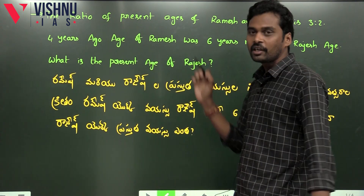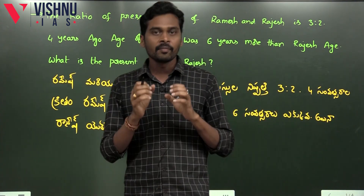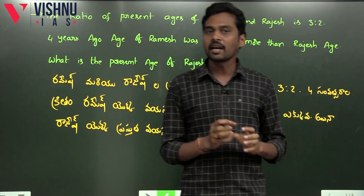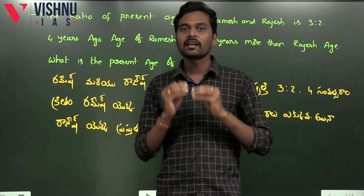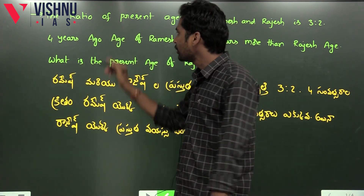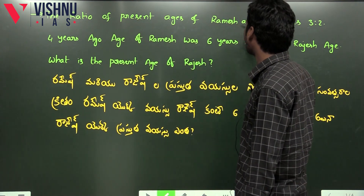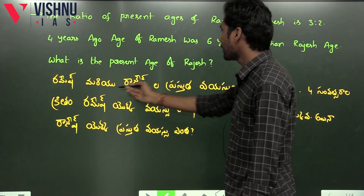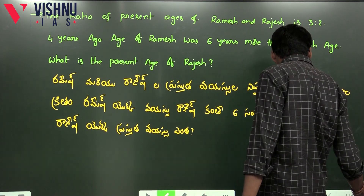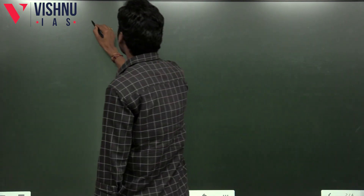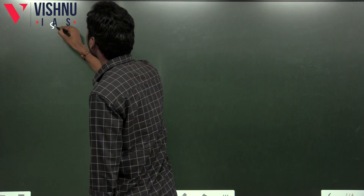First of all, we have to do the problem step by step. We will get into this descriptive exam format. You can't just state the data — you need to write it out clearly. The ratio of the present ages of Ramesh and Rajesh should be stated specifically. We will write the solution like this.